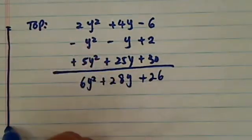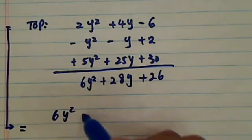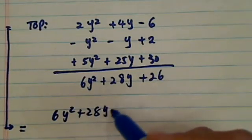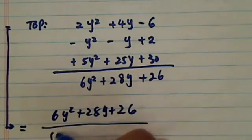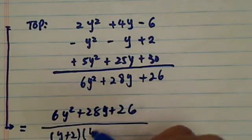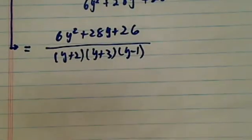So if I'm here, let's move this arrow down. I have the final answer is 6y squared plus 28y plus 26, and the denominator is (y plus 2)(y plus 3)(y minus 1). If you simplify one more time, I believe you have a factor of 2 in there.